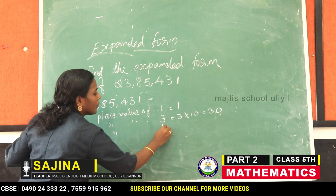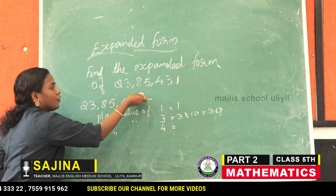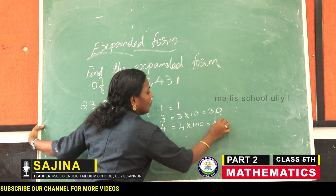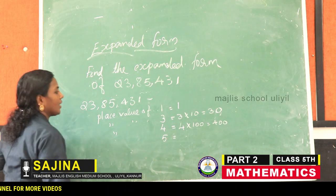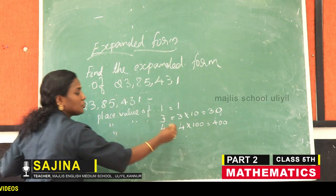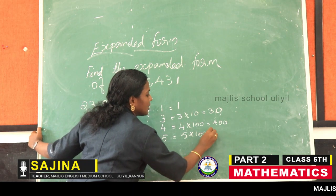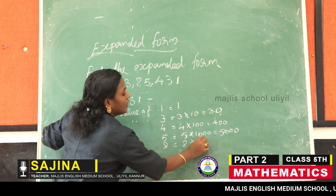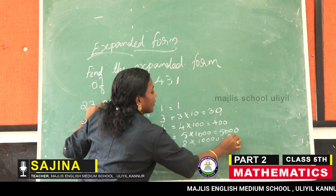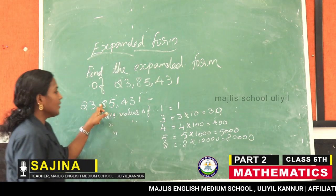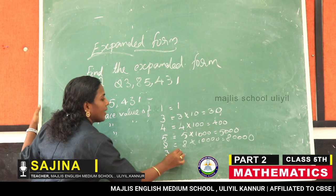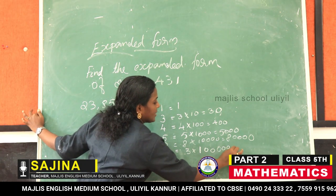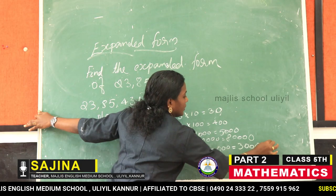Next, place value of four. Four is in hundred's place. Therefore, four into hundred is equal to four hundred. Then place value of five. Five is in thousand's place. Therefore, five into thousand is equal to five thousand. Eight is in ten thousand's place. Eight into ten thousand is equal to eighty thousand. And three is in lakh's place. Therefore, three into lakh is equal to three lakh.